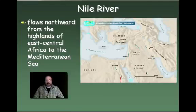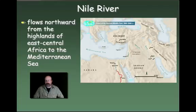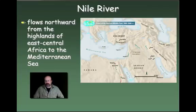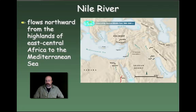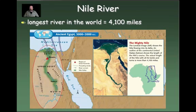Let's take a look at the Nile River. The Nile is unusual because it flows northward from the highlands of East Central Africa to the Mediterranean Sea. Most of the world's rivers flow south or east, but rivers flow down. This tells us that the Nile starts very far south in Africa where the Great Rift Valley begins — places like Lake Victoria, which is the source of the Nile. So in this case, the Nile actually flows north.